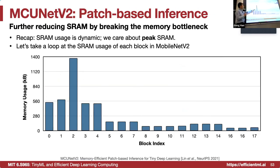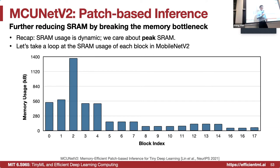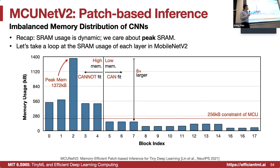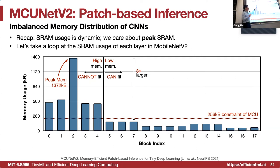Now the memory bottleneck: some blocks have a huge amount of memory dominating all the layers. Even if most layers are well within the memory budget, one large layer makes the model infeasible for the 256-kilobyte SRAM of a microcontroller. Layers can differ by as much as eight times. How do we conquer such dominating activations? Conventionally, we do layer-by-layer inference: layer one, layer two, keeping all input and output activations in memory when processing each layer. The largest memory footprint equals the max of the sum of input plus output activations at any given layer.